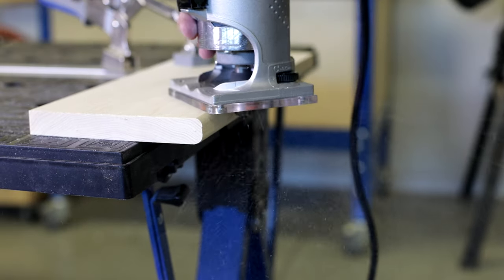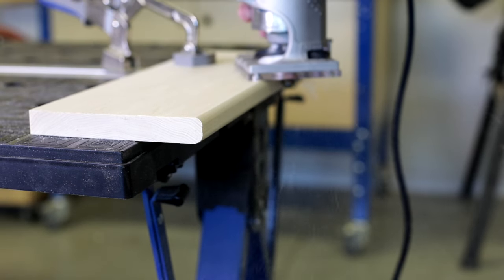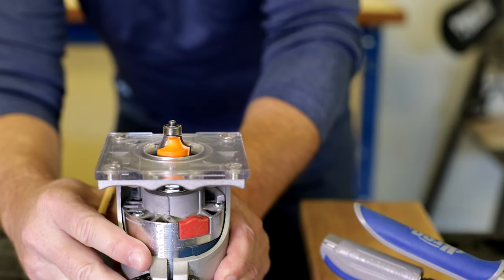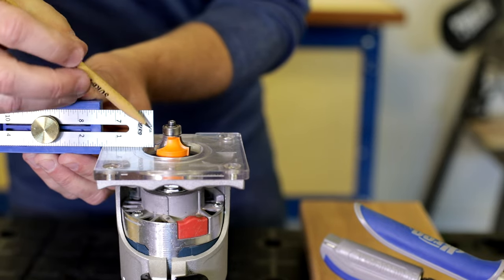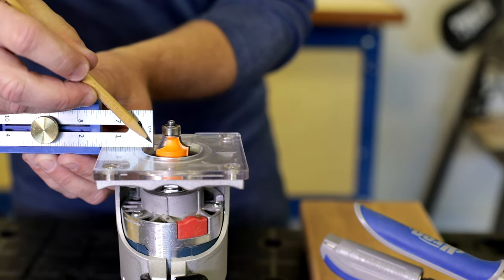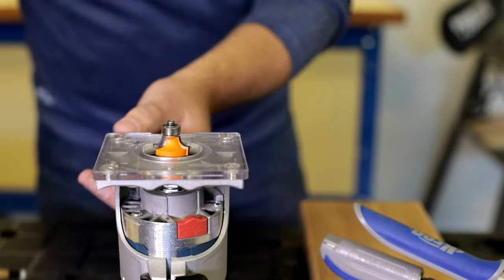The beaded round over is just as easy. First adjust the router base so this vertical part of the bit's cutter is just below the base, maybe a sixteenth of an inch.